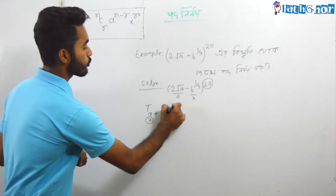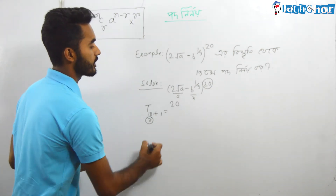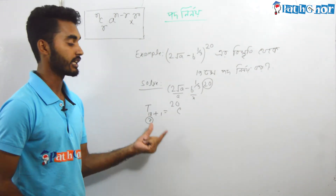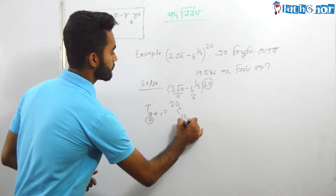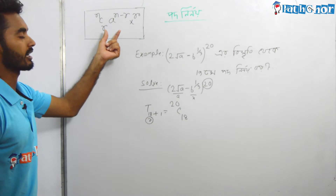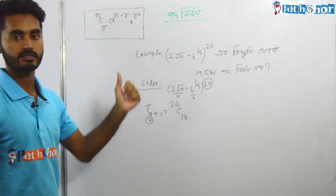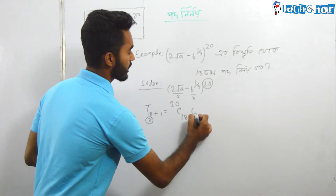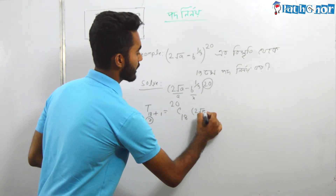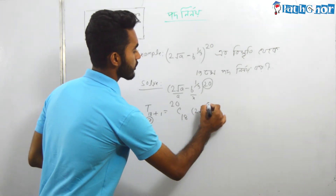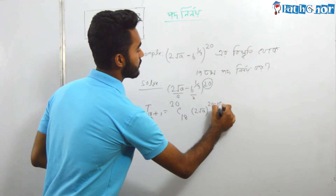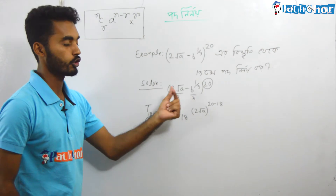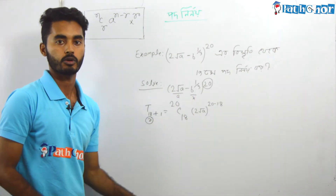So n minus a means 20. And r means 18. Now the second part: a to the power 2 root a, so 2 root a to the power n minus r, which is 20 minus 18. Then x to the power 2 root a, or x to the power of the remaining term.